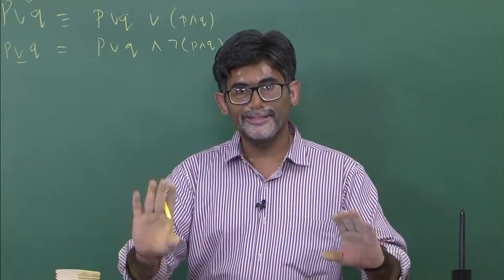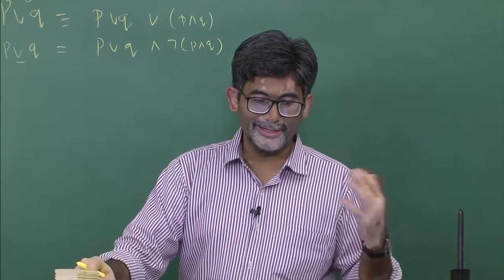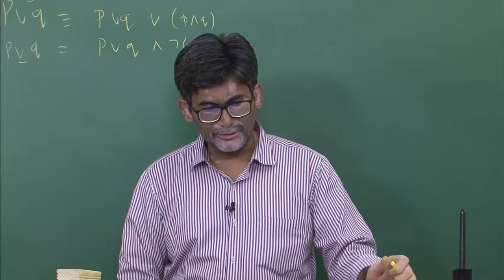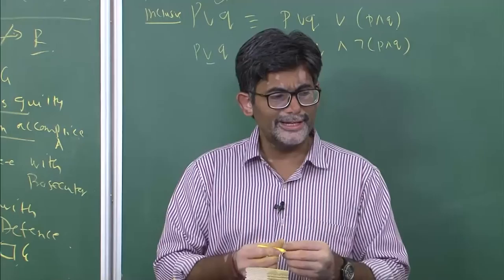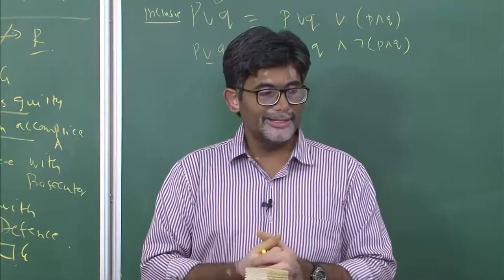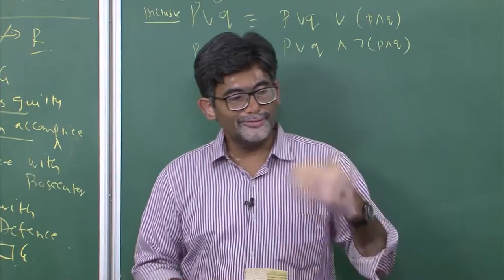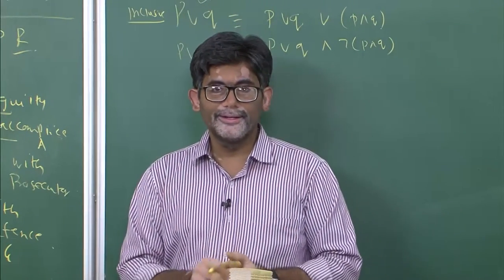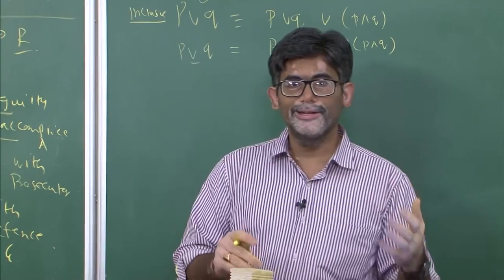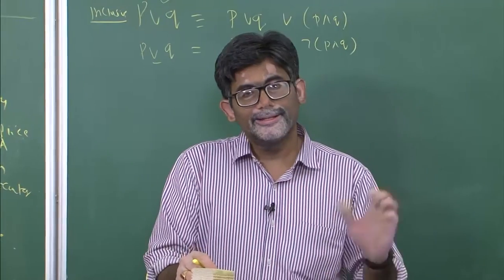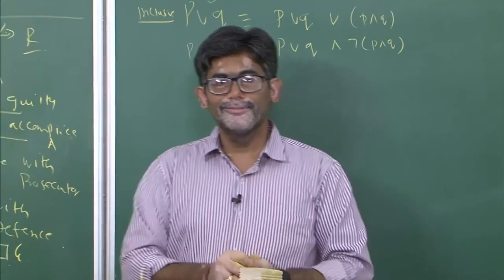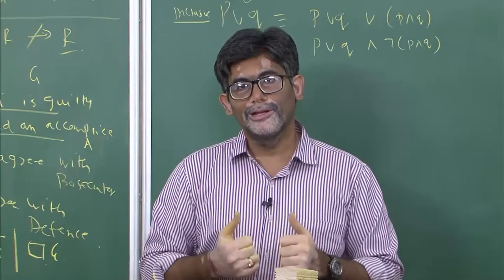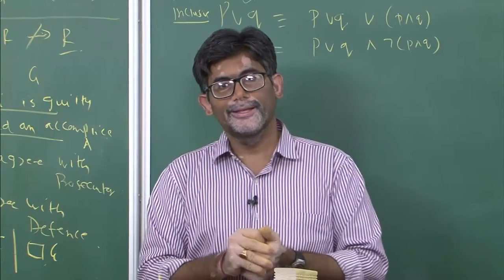Lewis came up with various axiomatic systems S1 through S5. For strict implication, S1 and S2 seem to capture it better. The first three systems he called non-normal modal logical systems, and S4 and S5 he views as normal modal logical systems. In the next class, we will be talking about the language of modal logic — its syntax and semantics. Thank you.